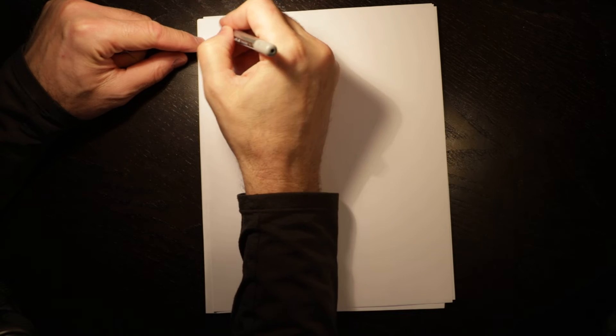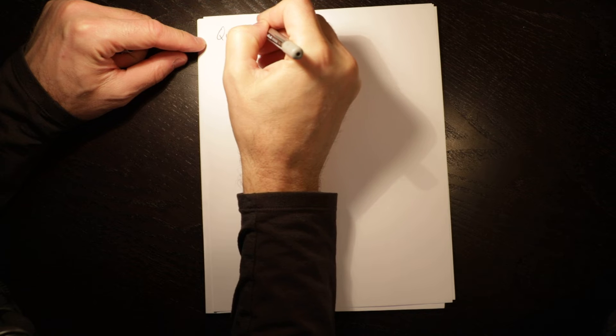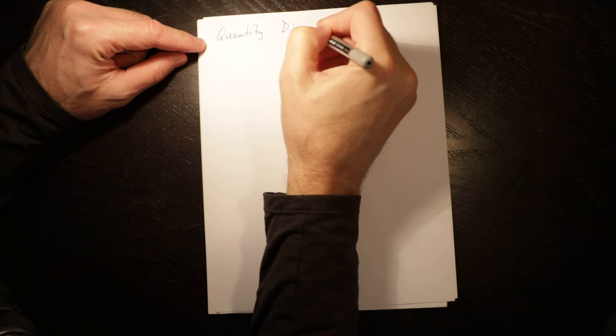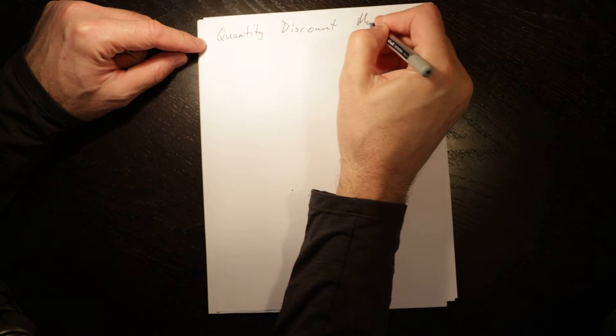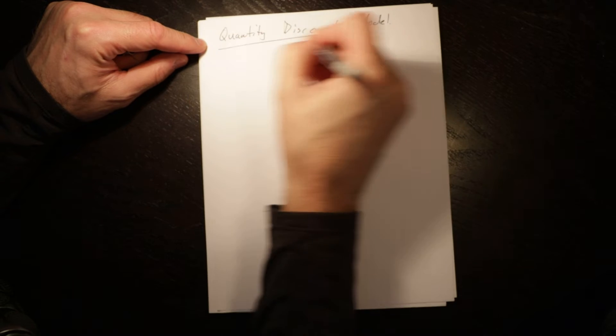Hello, in this video we're going to talk about the quantity discount model. The quantity discount model is making a decision when you want to order optimally, but if you order different quantities you get a better deal. In this circumstance, we don't just look at setup costs and holding costs; we also have to consider our acquisition costs.